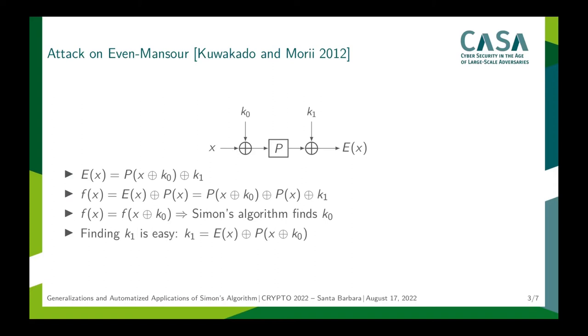To encrypt x, we add k0, apply the permutation, and then add the second key, k1. In the classical world, we can prove that this is a secure block cipher. But now, consider the function f, which is simply the encryption of x XOR the public permutation of x. Notice that if we add k0 to the input of f, the output of f does not change. In other words, k0 is a period of f.